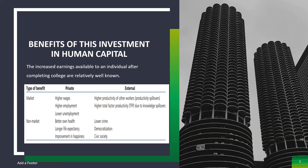Degree holders earn more than those who have dropped out and do not have a diploma. This is not a fake diploma effect, because those who have a diploma have more human capital. Graduates who have completed all degree requirements with a satisfactory grade point average have acquired more human capital than those who have not. Diploma holders with more human capital are more productive in the judgment of employers and are therefore worth more. Diploma holders from prestigious colleges may earn more because the quality of their education may have been better.